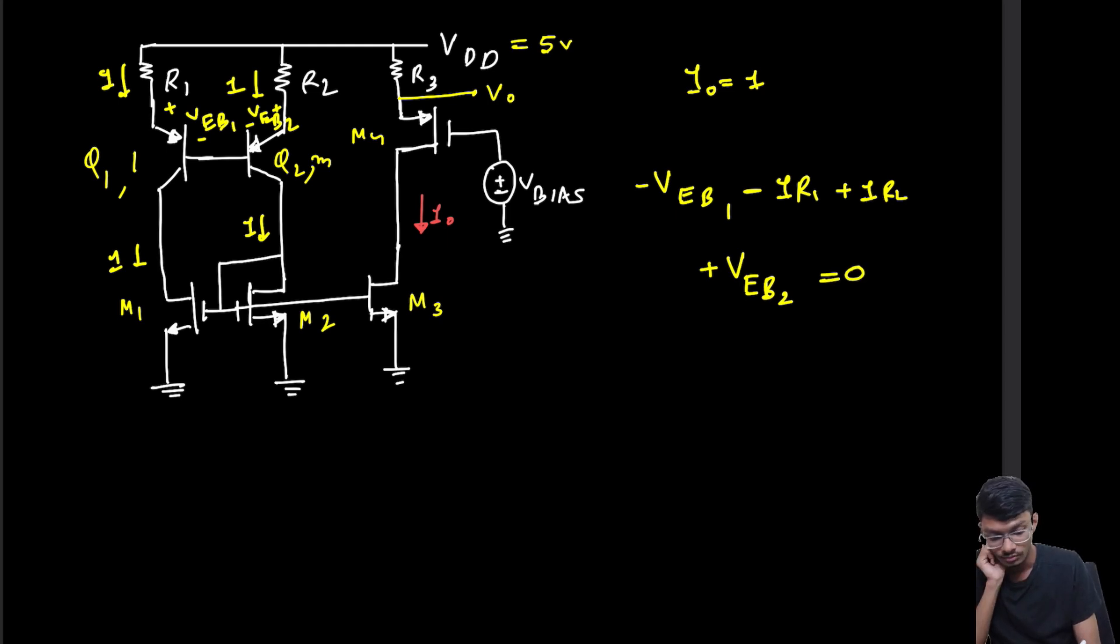What is the emitter-base voltage defined in a BJT? The emitter-base junction acts as a diode. For a forward-biased diode, we write the current equation as VT ln(IC/Is). Basically, IC equals I in our case because beta is very high.